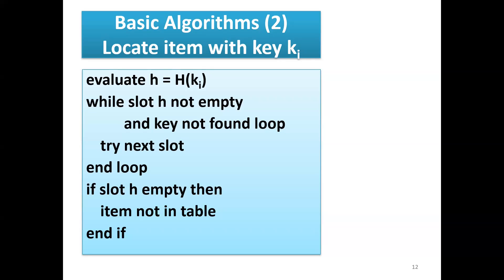To locate an item in the hash table, we use a similar operation. First, evaluate the hash function. While slot h is not empty, check if that is the item you want to locate. If not, look at the next slot and continue until you either find the item or reach an empty slot — at which point the item is not in the table. These are the steps to locate an item within the hash table.